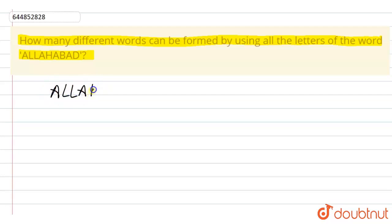So the word Allahabad contains A how many times? One, two, three, four times. So A is four times here, and L is two times.